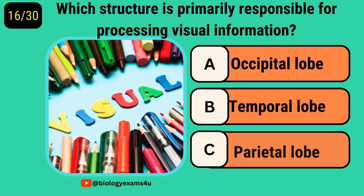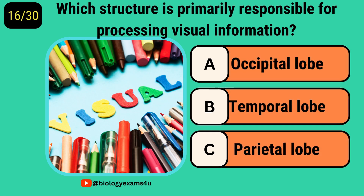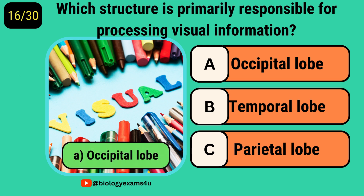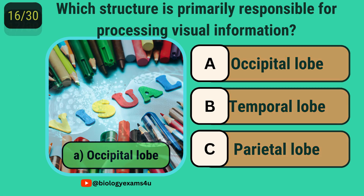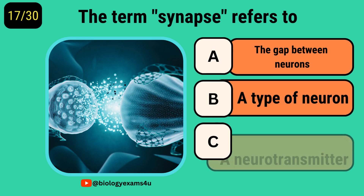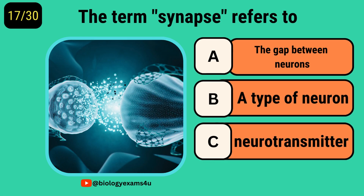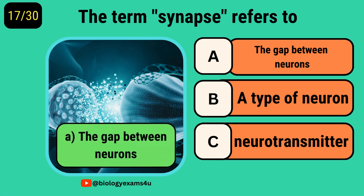Which structure is primarily responsible for processing visual information? Occipital lobe. The term synapse refers to? The gap between neurons.